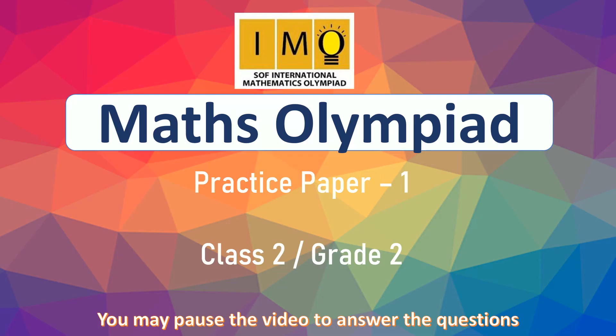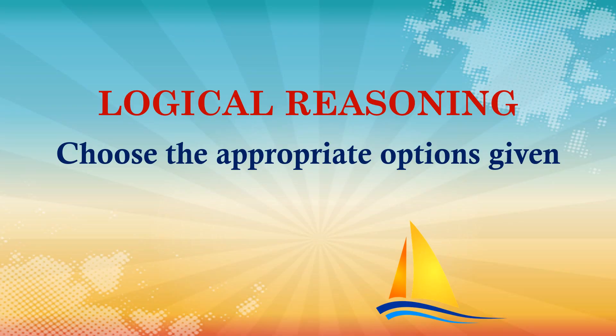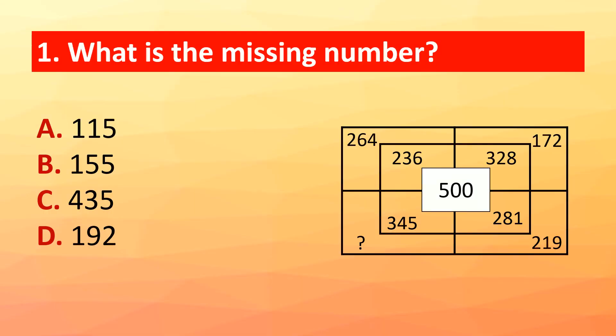International Math Olympiad practice paper 1, Class 2, Grade 2 — Logical Reasoning. Choose the appropriate options. Question 1: What is the missing number? Look at the picture and find the missing number. The correct answer is option B: 155.